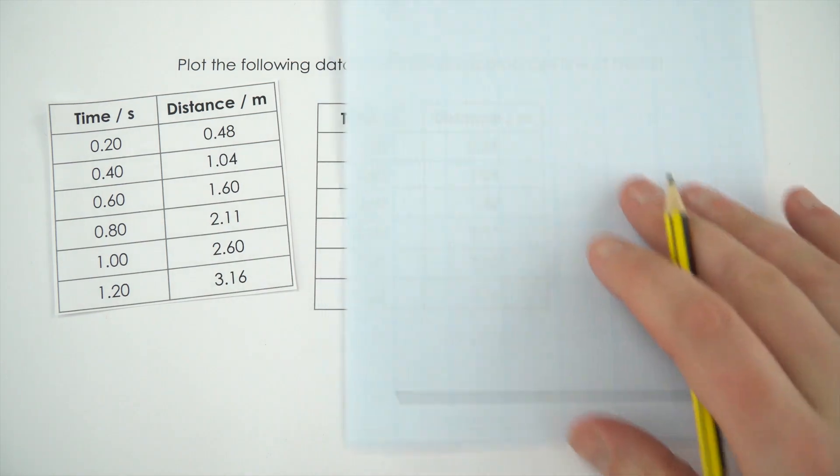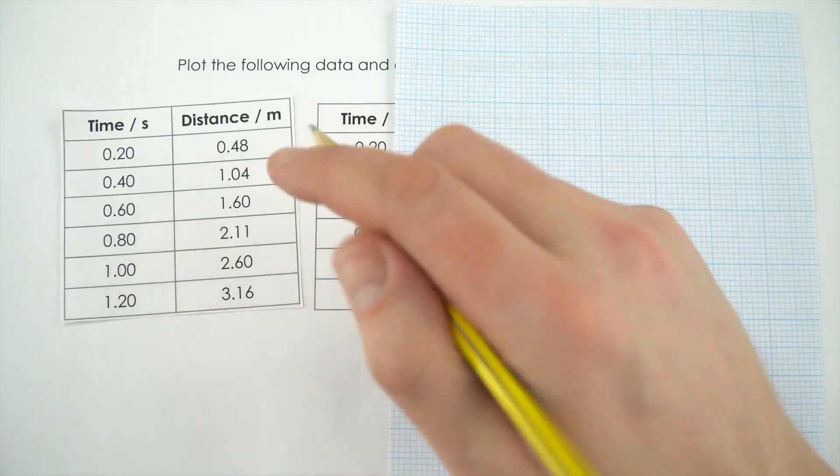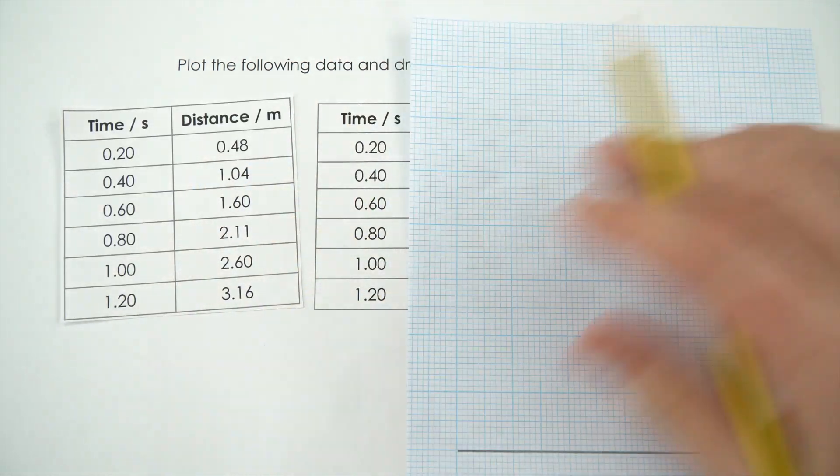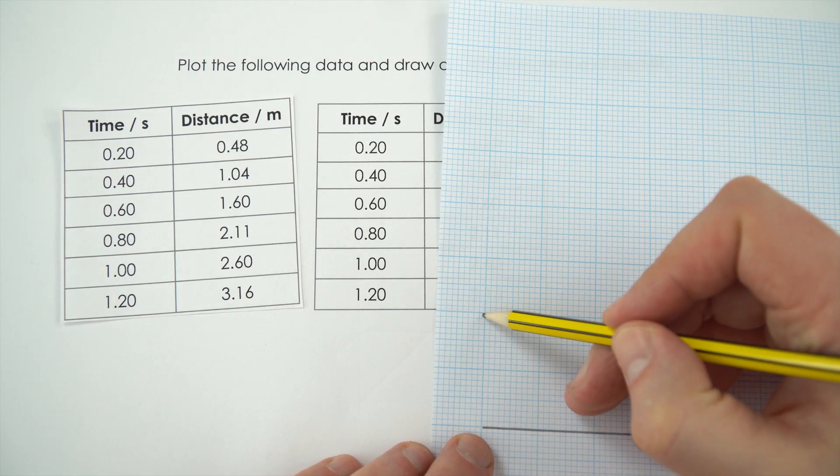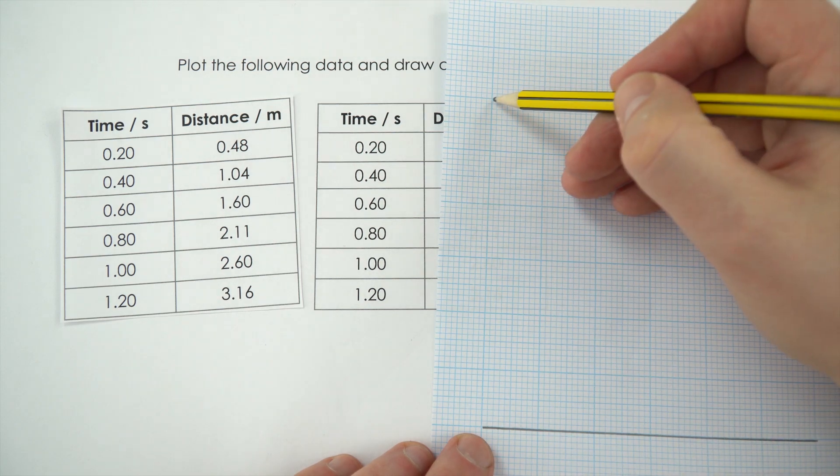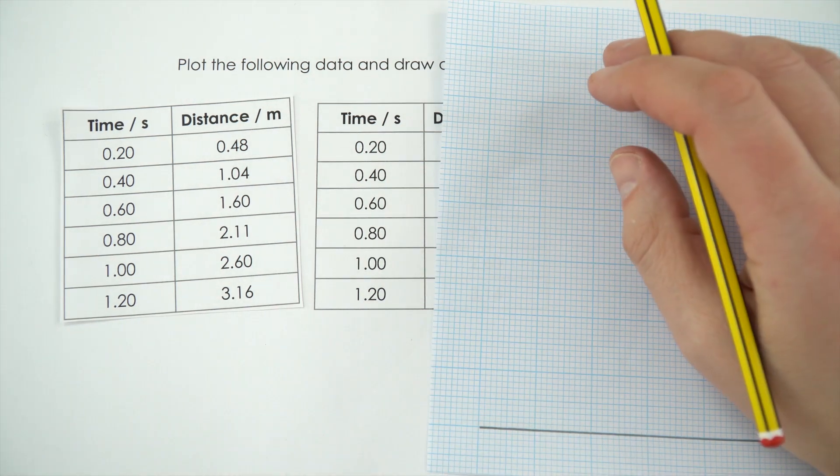I can then do the same for the y-axis. We're going to go up to just over 3. Looking at this, if that's 0.5 and that's 1, then that's 2, that's 3, and that's 3.5, so again that can fit in.